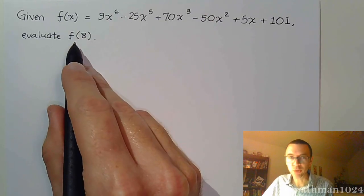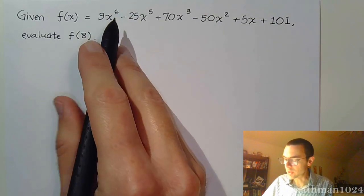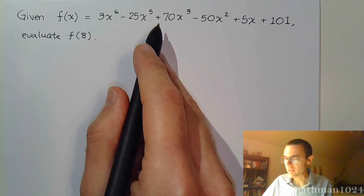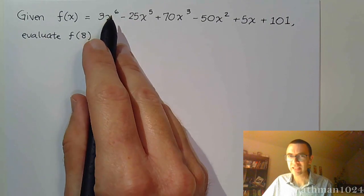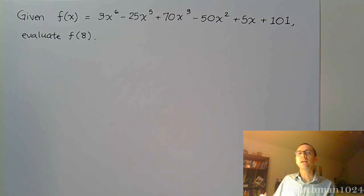You could do it the long way where you replace all the x's with 8, and that's going to get really messy, right? Imagine 8 to the 6th power. I don't even want to think about that. Instead of plugging in 8 to all of these, this is where we get to use the remainder theorem.